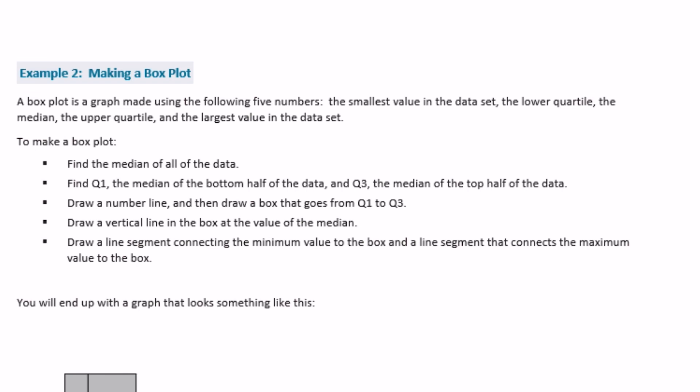Example two, making a box plot. A box plot is a graph made using the following five numbers. The smallest value in the data set, the lower quartile, the median, the upper quartile, and the largest value in the data set. So this is a culmination of everything we've been working on in the last few lessons. The reason why we've been finding the lower quartile, the upper quartile, the median. Now we're going to put it all together and make a box plot.